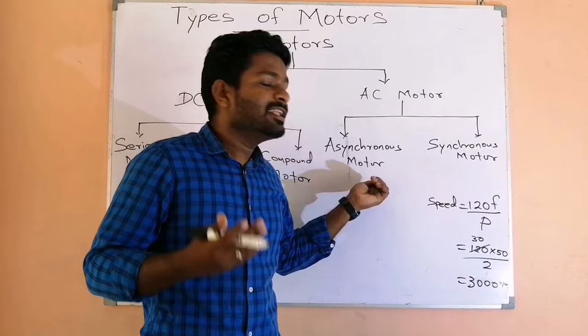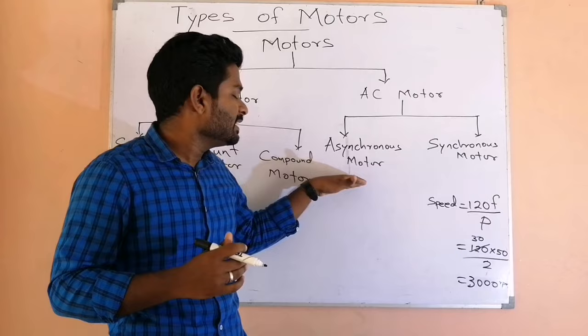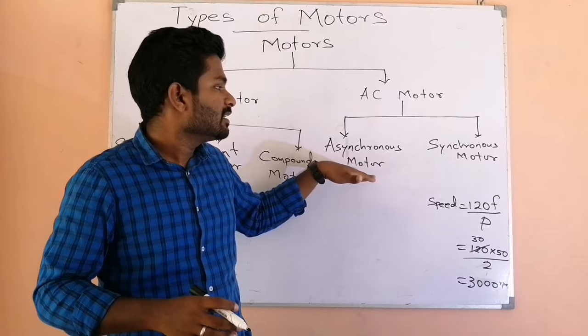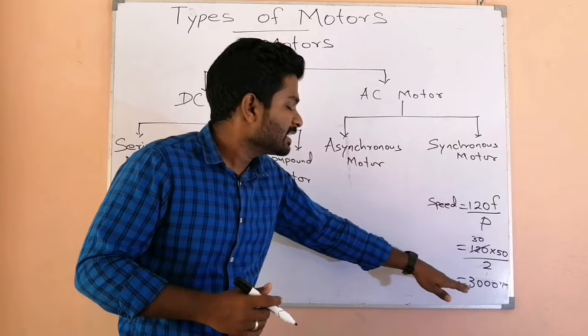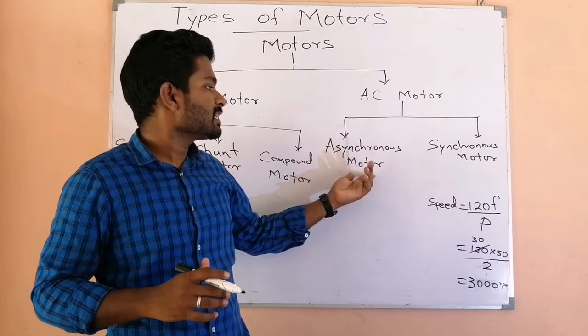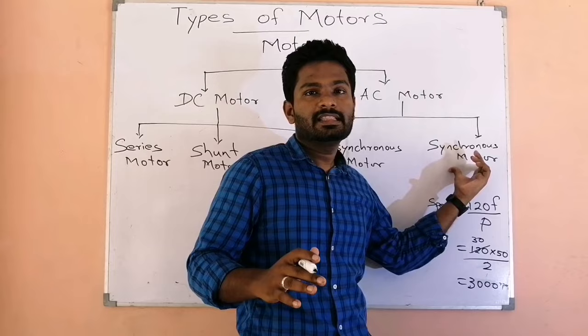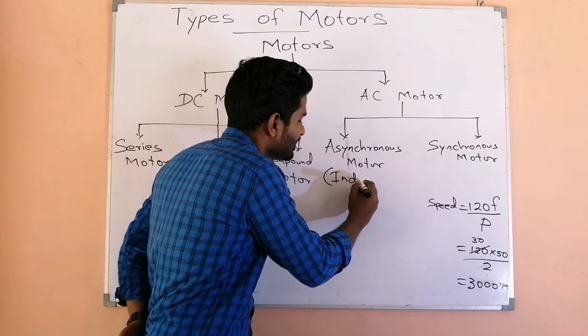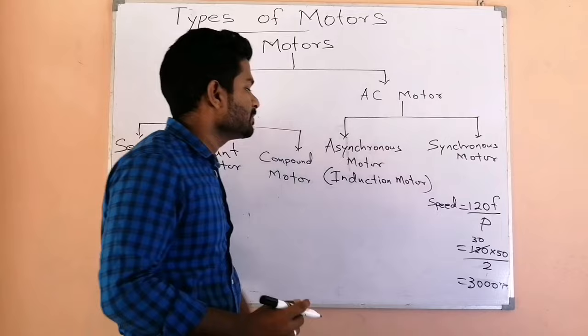Now you can understand what an asynchronous motor means. If the rotating magnetic field speed and the motor speed are not equal, those kinds of motors are called asynchronous motors. Normally the motor speed is less than the rotating magnetic field speed. If the speeds are not equal it's called an asynchronous motor; if the speeds are the same it's called a synchronous motor.